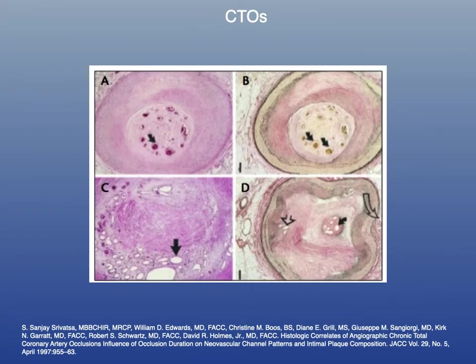If you've never seen a CTO under cross-section, this is what it looks like — the black arrows are pointing to small microchannels. When people talk about guide wire escalation — 014, 018, 035 — this is what they're referring to. You start small, trying to access these microchannels to perform recanalization, and you escalate based on how your CTO crossing is progressing.